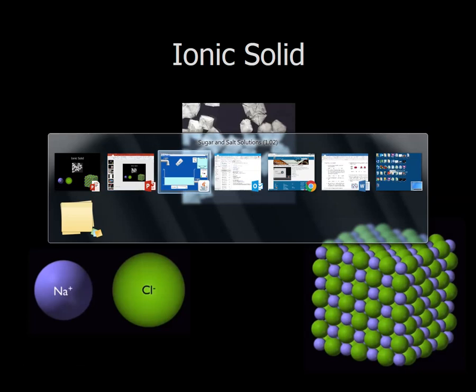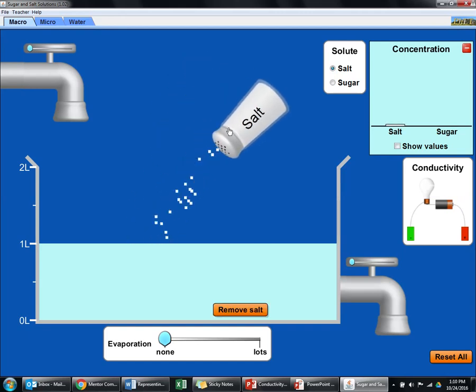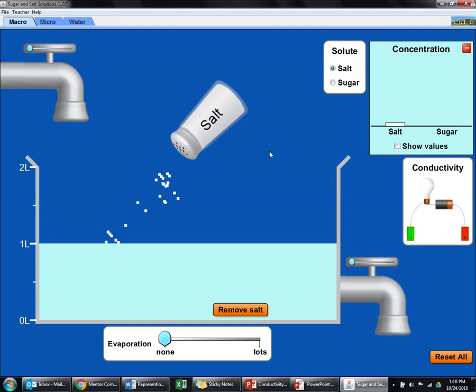So when we put this in water, it does something. Here's a simulator that shows some water and some salt up here. We all know that we can dissolve salt in water. We can make salt water. So as I dissolve this in here, you can see that the concentration of the salt is going up.